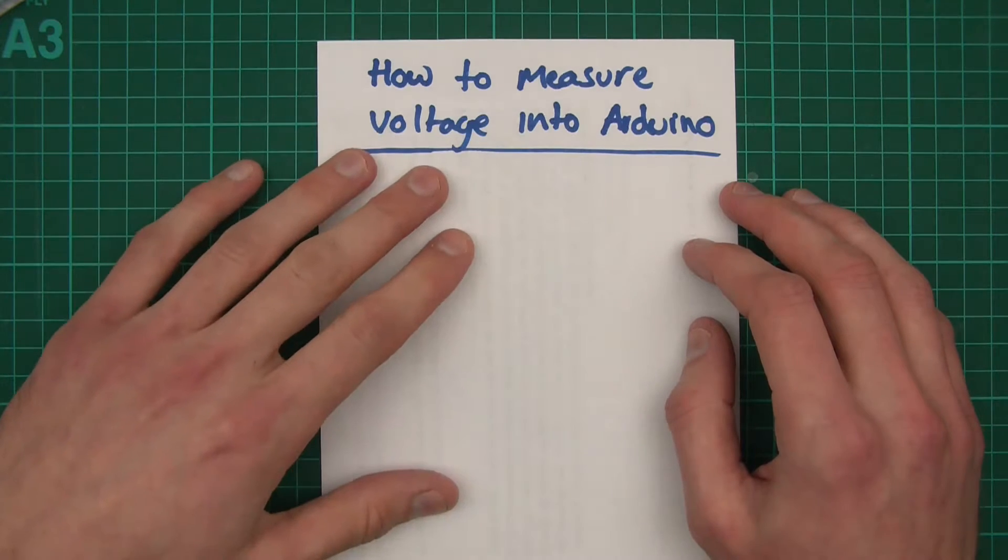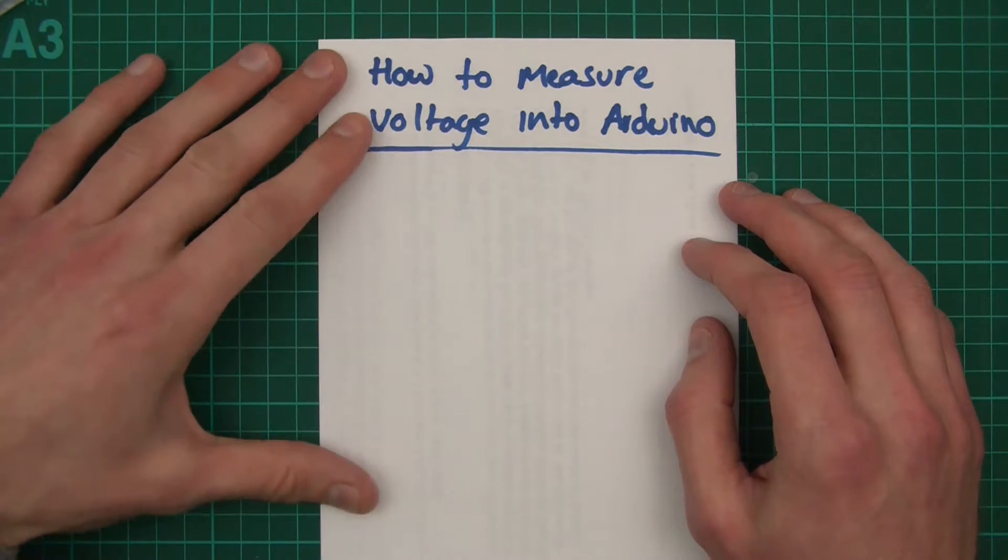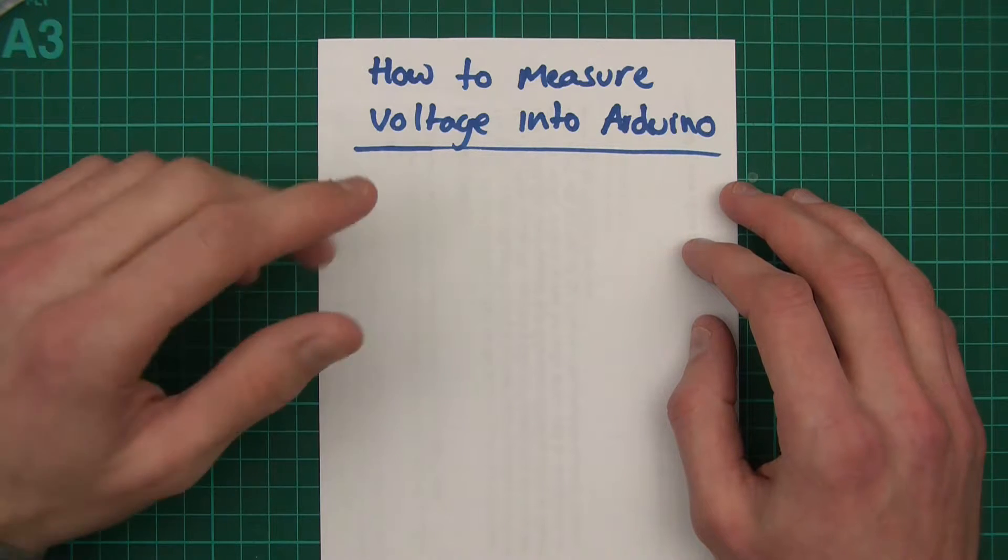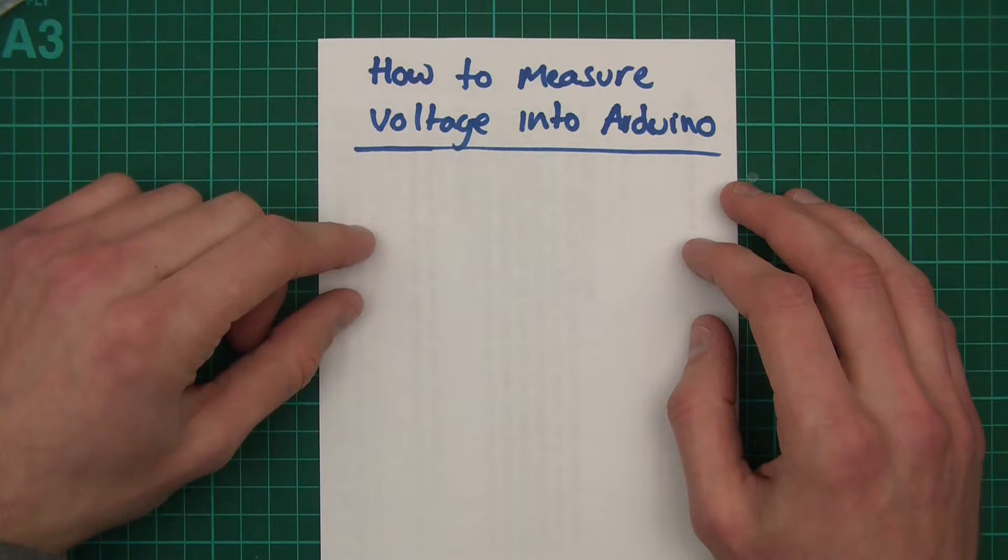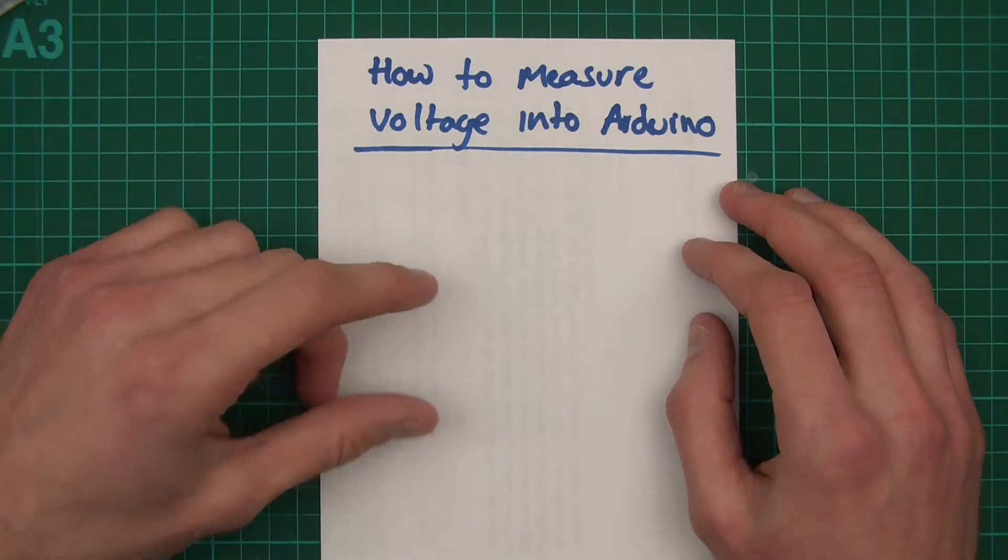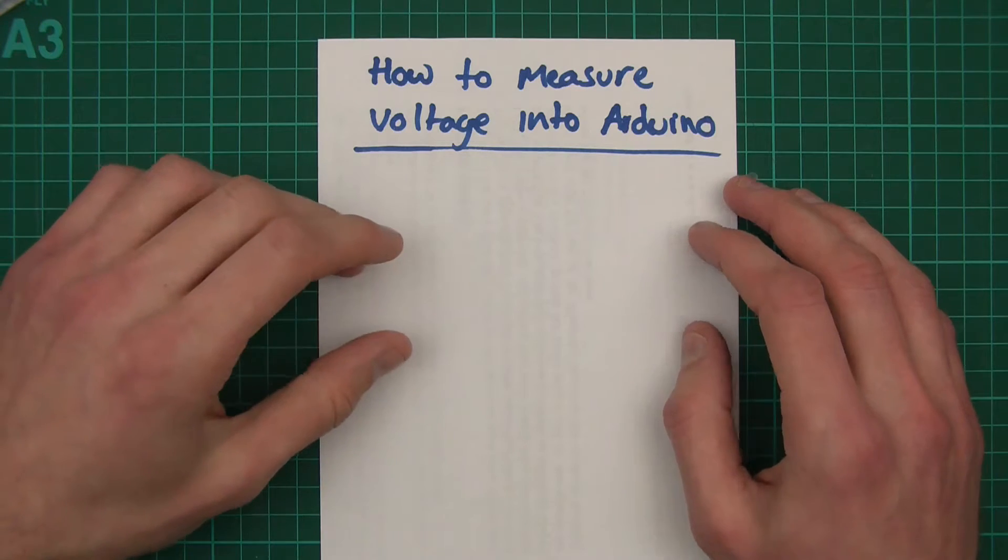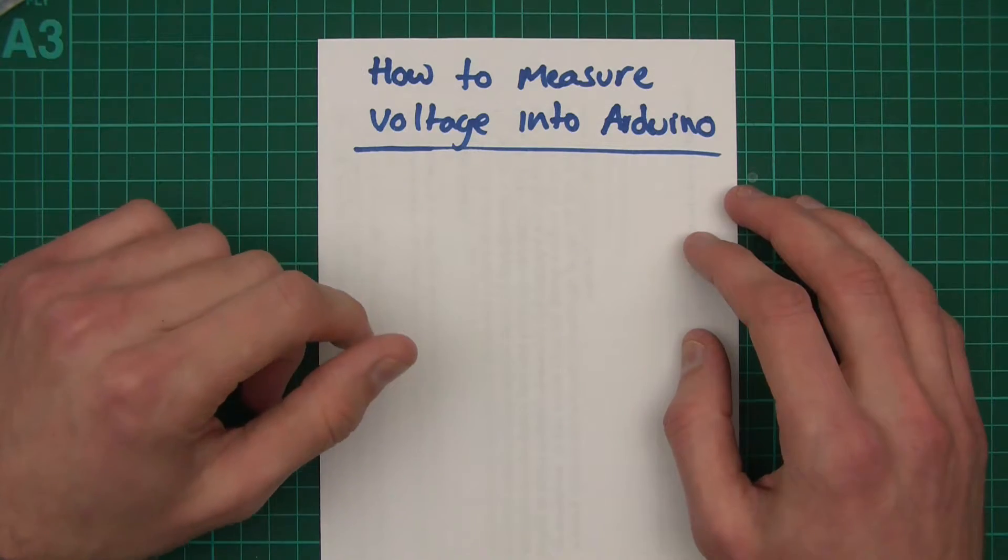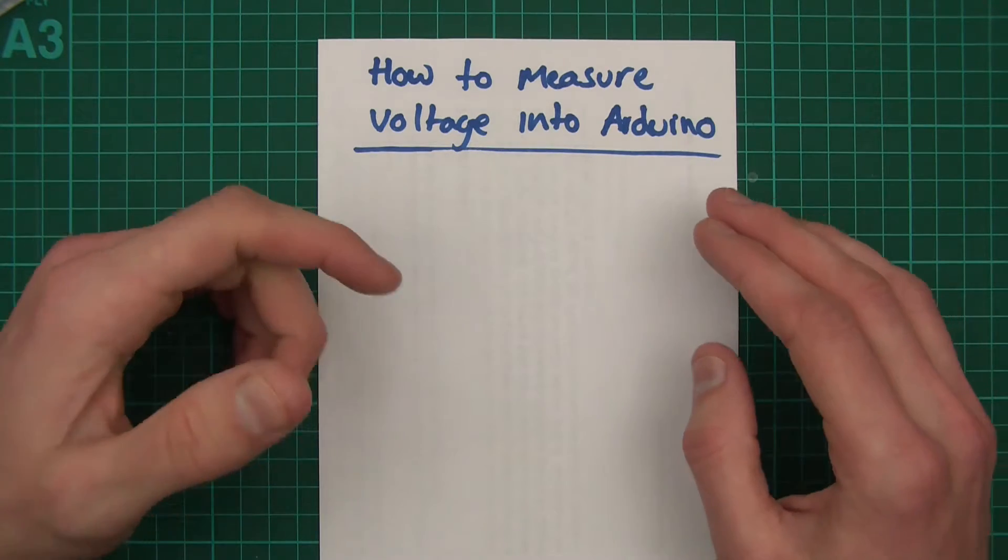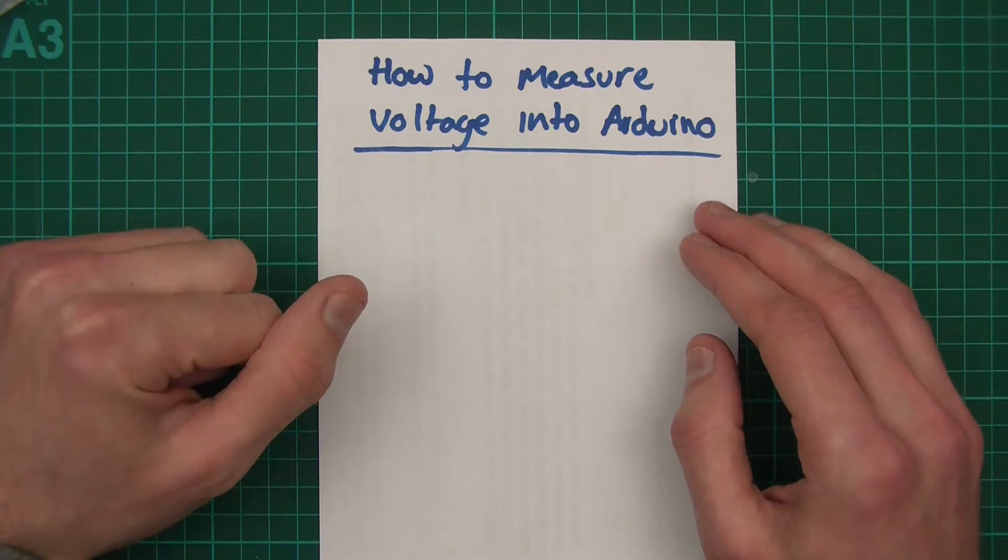To start with, why would you want to measure voltage into Arduino? Well, there are lots of different reasons. You might have an LDR, a light dependent resistor, or you might have a sensor or something like that which senses something from the environment and it's a source of input to the Arduino so that you can do something.